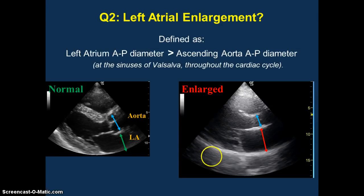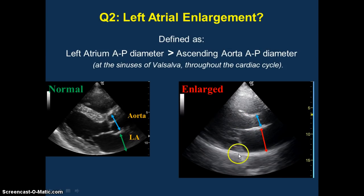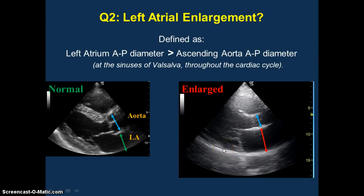The second question we're going to ask ourselves is whether there is any evidence of left atrial enlargement. The rule of thumb we're going to use is: is the left atrial AP diameter the same as the aortic root AP diameter? In a normal patient, they should be about equal. When there's left atrial enlargement, the AP diameter here will be much bigger than the aortic root. Think of the left atrium as the hemoglobin A1c of left ventricular filling pressures — over a long period of time, elevated filling pressures are going to cause the left atrium to dilate and stretch.